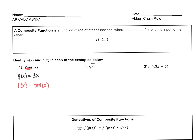Same thing for number two. Your g of x is the thing inside, so that is e to the x. And your f of x — what you are applying to it — is the outside radical, so the square root of x.